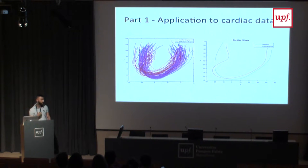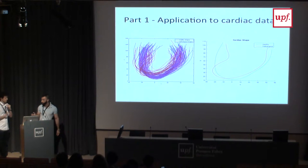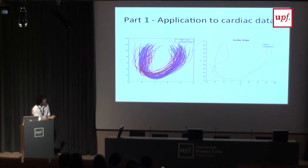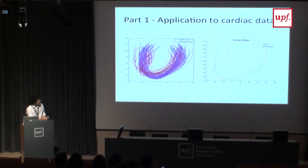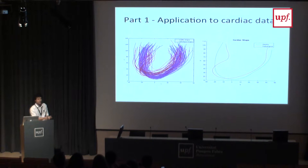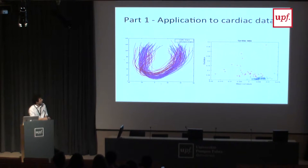Now Luca is going to talk about a practical application of this tool. We applied this concept to some cardiac data. Here we can see cardiac shapes divided into healthy and pathological categories. We identified as a parameter the oscillation in curvature over the mean curvature of the left side of the curve. As a result, the data are quite linearly separable.